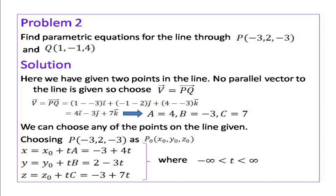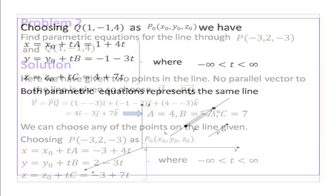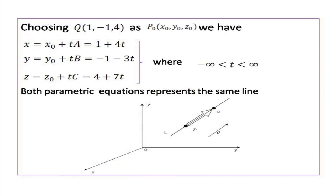Instead of choosing P, if we choose Q as P0(x0, y0, z0), the parametric equations will be: x = 1 + 4t, y = -1 - 3t, z = 4 + 7t. Both parametric equations represent the same line, since P and Q are points on the line.